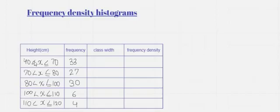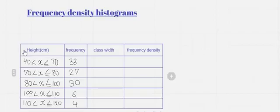As we can see, the difference between them is not equal. First it is from 40 to 70, then from 70 to 80, 80 to 100, and so on. In this case, we have to calculate the frequency density in order to plot our histogram properly.